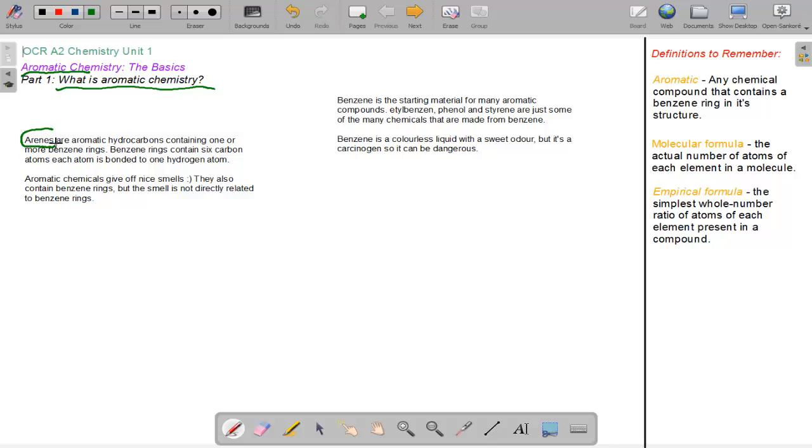Arenes, the compounds you are going to meet, are aromatic hydrocarbons containing one or more benzene rings.